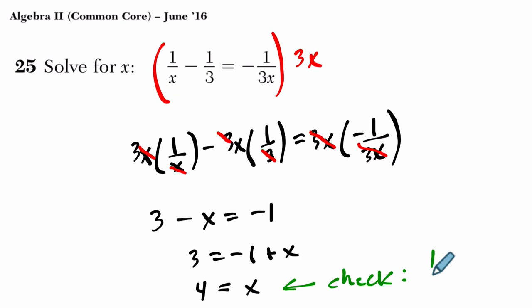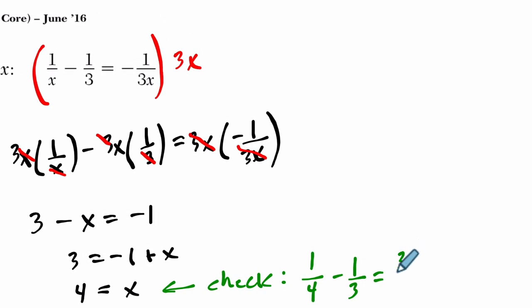So we have 1 over 4, minus 1 over 3. And that's equal to, let's see, those are twelfths now. 3 twelfths minus 4 twelfths. And that's negative 1 twelfth. Does that equal the right side of the equation if you plug in 4? It does, right? Negative 1 over 3 times 4 is negative 1 twelfth, which is what we have right here. So we know it's not extraneous.